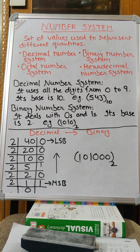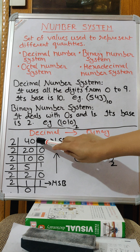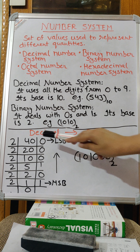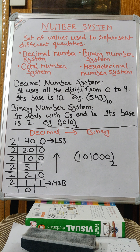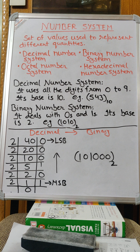First we will learn how to convert decimal number system into binary number system. I have taken one example: 40. So how will you convert 40 decimal into binary? It's very simple and very interesting.